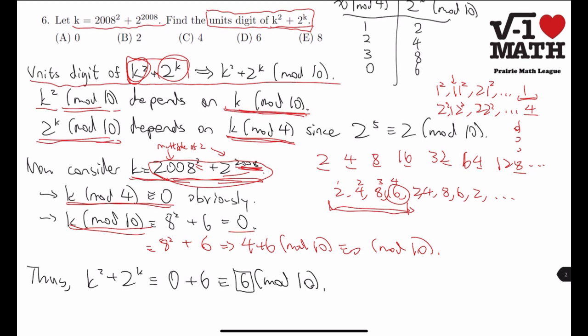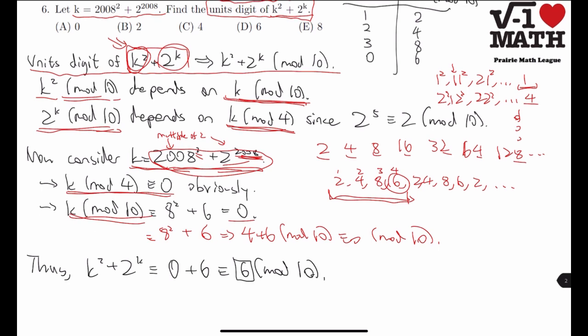Now, finally, we can put this back into k squared plus 2 to the k. K squared is 0, because k mod 10 is 0. So we have k squared congruent to 0 mod 10.